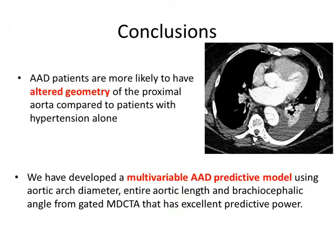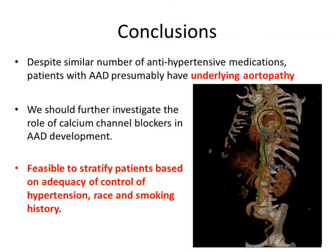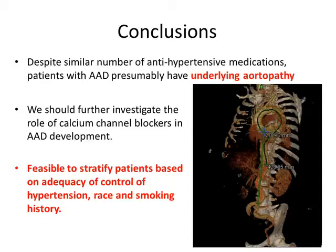In conclusion, AAD patients are more likely to have altered geometry of the proximal aorta compared to patients with hypertension alone. We've developed a multivariable AAD predictive model using three anatomic variables from gated MD-CTA with excellent predictive power. Despite similar numbers of antihypertensive medications, the elevated systolic blood pressures in AAD suggest they may be suffering from an underlying aortopathy that requires further investigation. We also believe that the role of calcium channel blockers in AAD may warrant further investigation, and that it's feasible to stratify patients based on adequacy of control of hypertension, race, and smoking history.